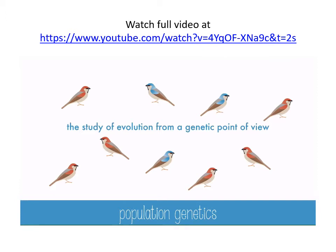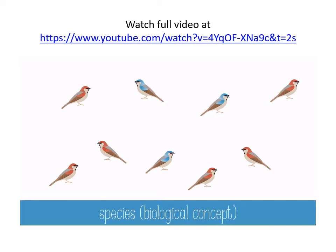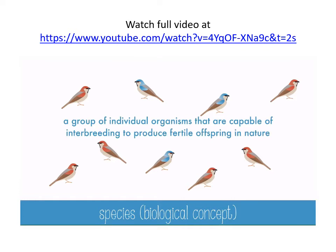It's a change in the collective genetic material of a population. Recall that a population is a group of individuals of the same species that routinely interbreed. Populations are the smallest unit in which evolution will occur. Many people mistakenly think that evolution occurs in one individual, but actually it happens among a group, a species. There is some difficulty in defining a species, but we'll start with the biological concept of a species — a group of individual organisms that are capable of interbreeding to produce fertile offspring in nature. Some animals of different species will breed in captivity but not in the wild, so the biological concept is specific enough to keep these as unique species.